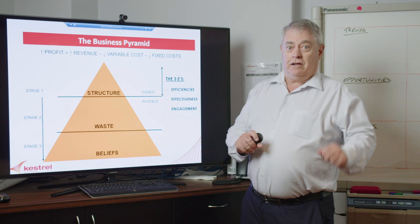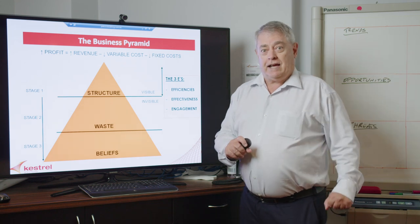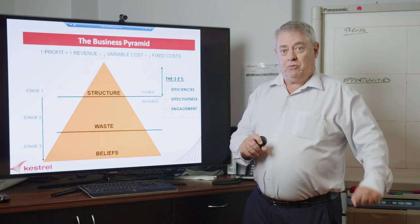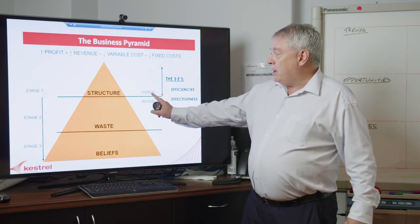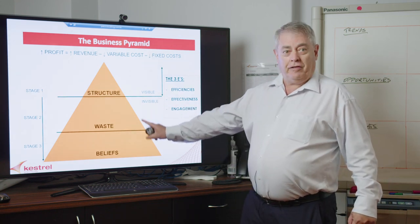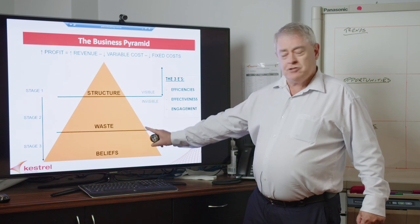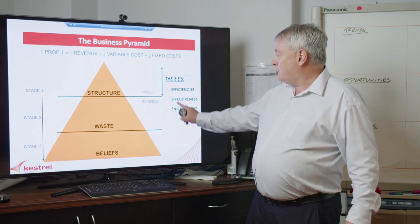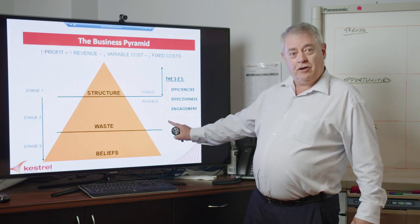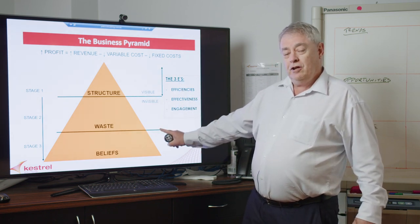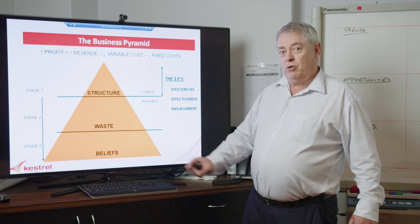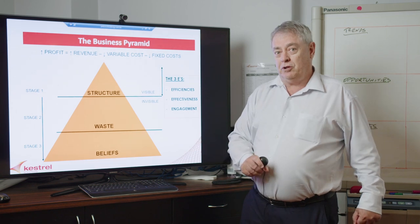We saw that in the state government back in the Campbell Newman era. So getting below the line — that's the stuff you can't see, because those three E's don't appear in the profit and loss. Improving that will improve your profitability.